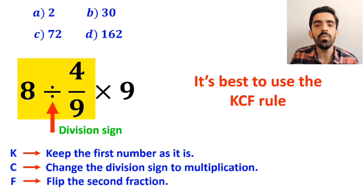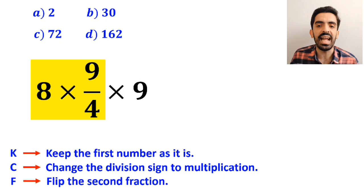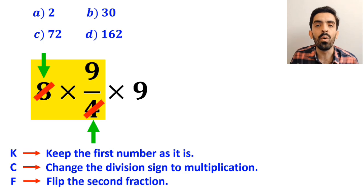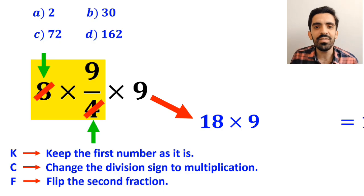So, we remove the highlighted part and replace it with 8 times 9 over 4. Alright, as you can see on the screen, the number 8 simplifies with the 4 in the denominator, and this expression simplifies to 18 multiplied by 9, which finally gives us the answer 162.